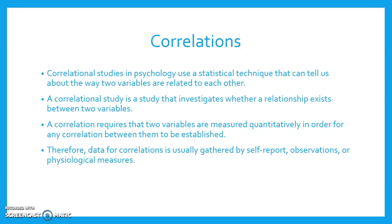A correlation requires that two variables are measured quantitatively in order for any correlation between them to be established. Therefore, data for correlations is usually gathered by self-report, observations, or physiological measures.